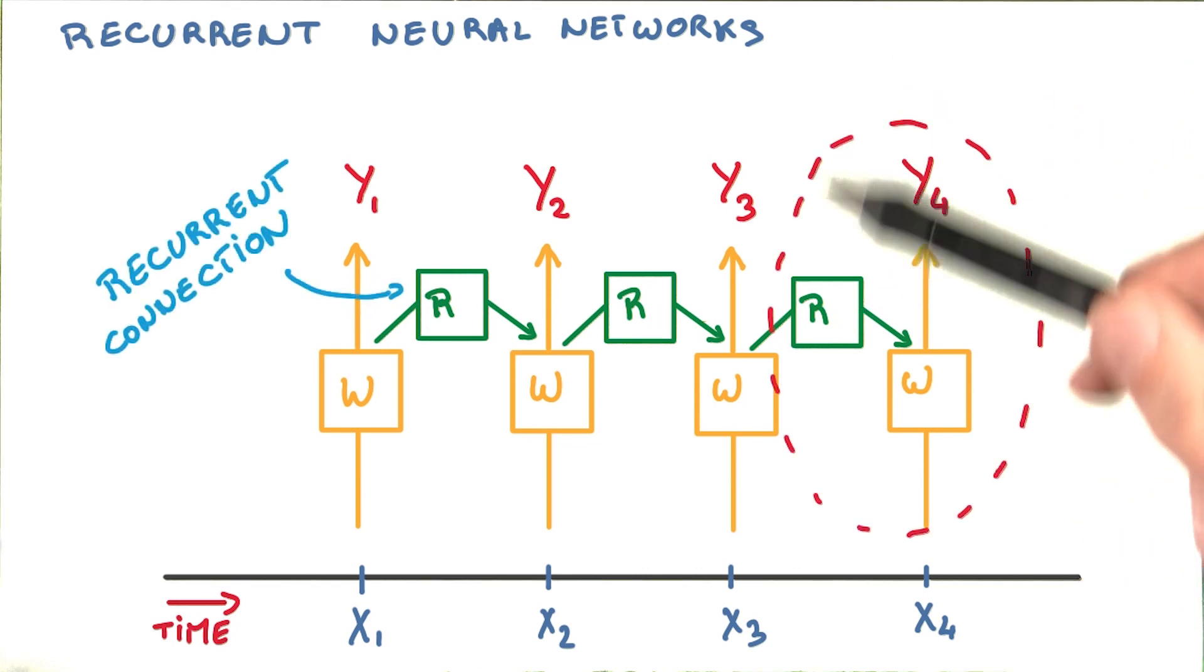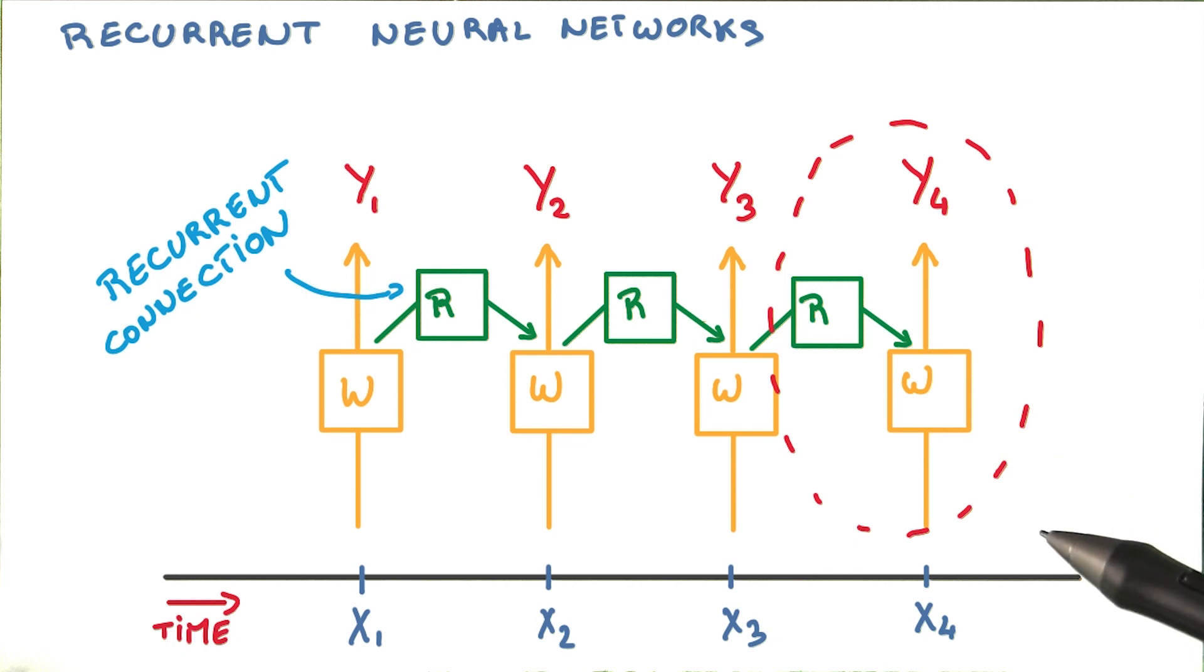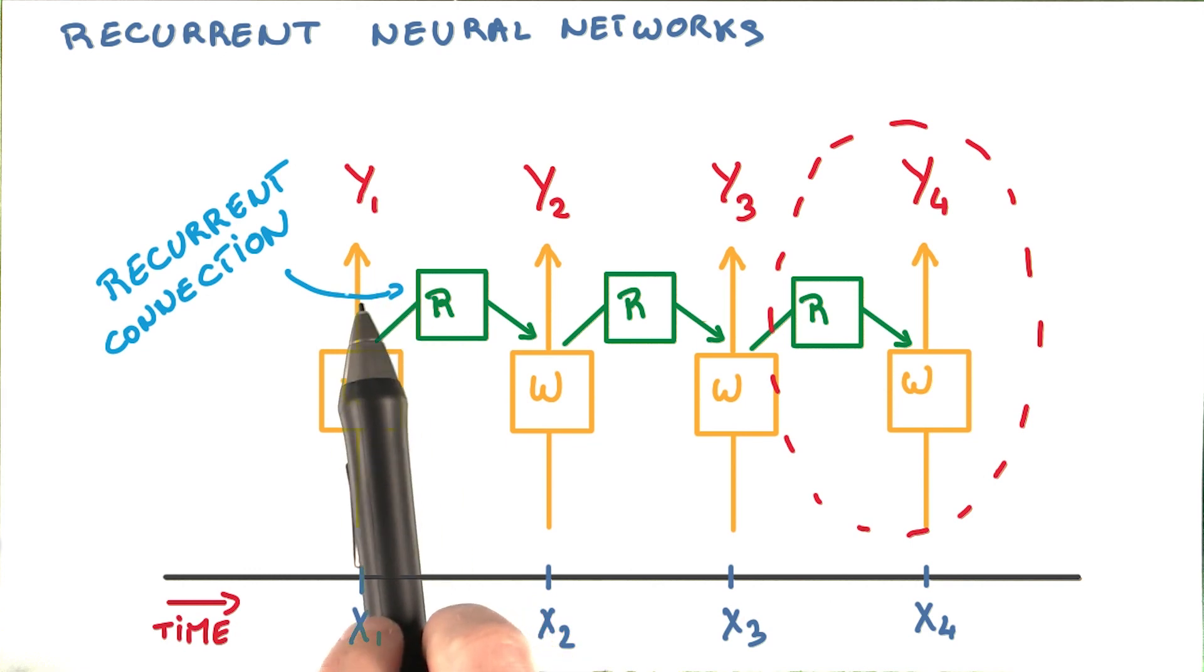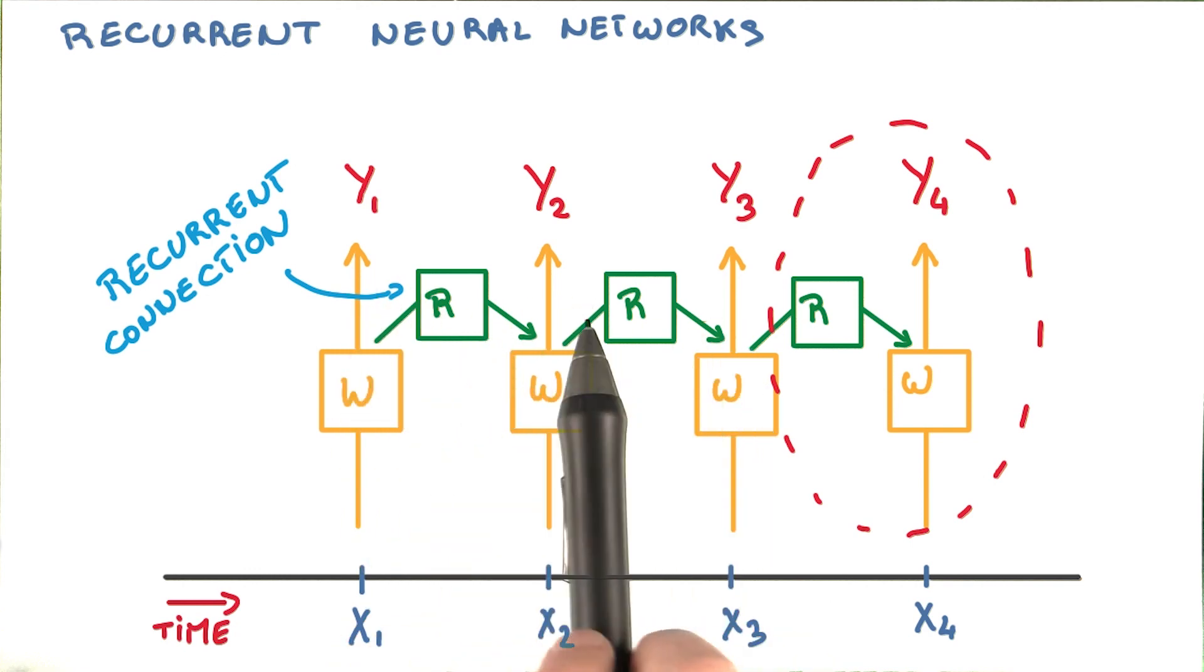What you end up with is a network with a relatively simple repeating pattern, with part of your classifier connecting to the input at each time step, and another part called the recurrent connection connecting you to the past at each step.